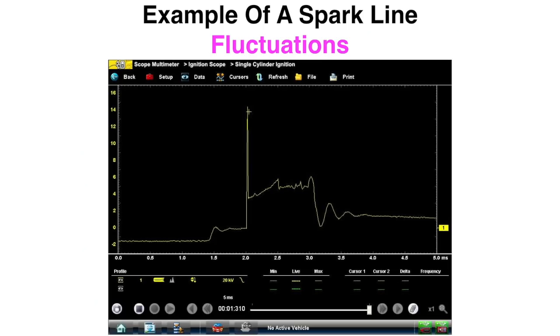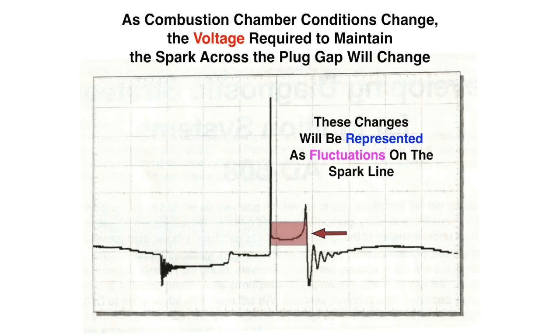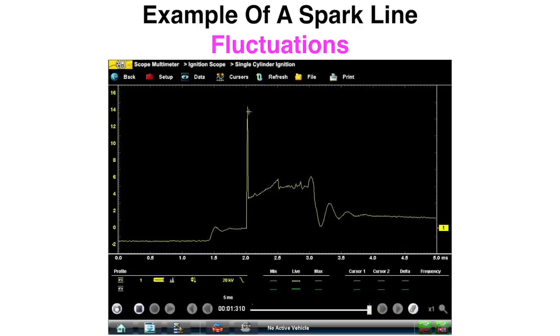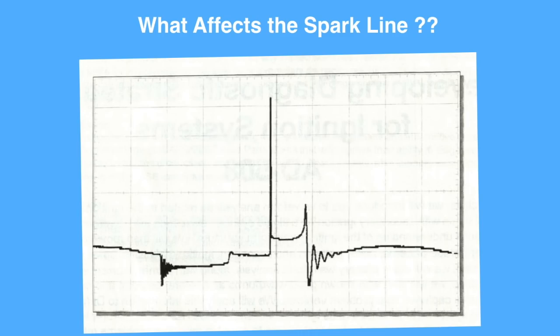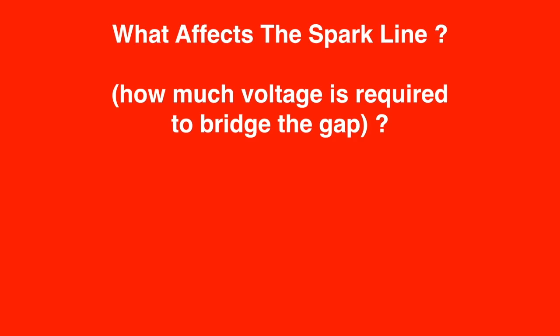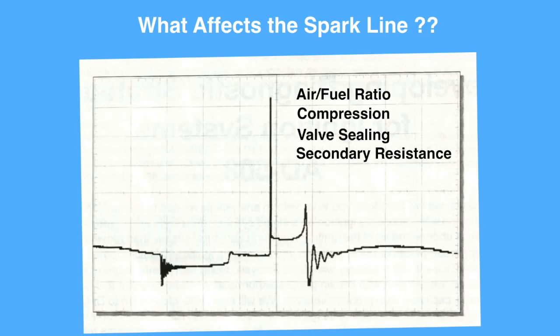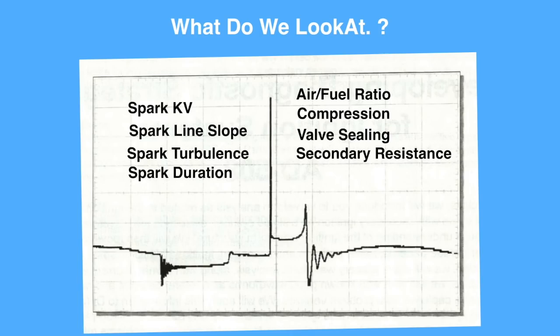Here's an example of fluctuations on the spark line. What affects the spark line — how much voltage is required to bridge the gap? Air-fuel ratio, compression, valve sealing, and secondary resistance — you would see that right in the spark line. So what do we look at? We look at spark kV, spark line slope, spark turbulence, and spark duration.